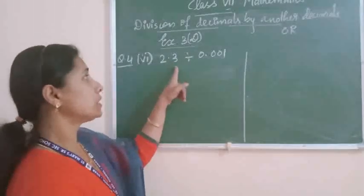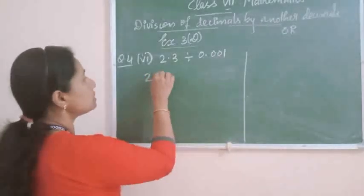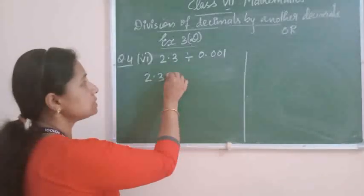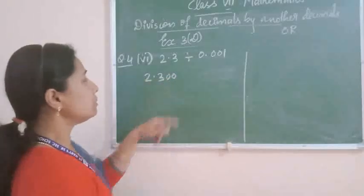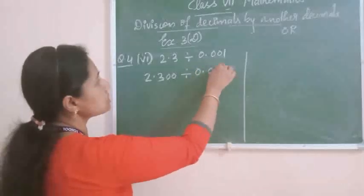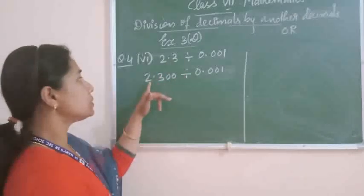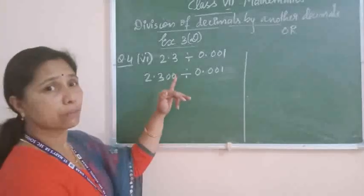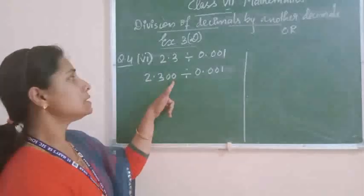Like decimals means the number of digits after the point will be the same. So you take 2.3 — here 3 digits are needed, but only 1 digit is given. So you can make it 3 digits by adding 2 more zeros. Now it is 2.300 divided by 0.001. You already know that 2.3 is equal to 2.300 — whenever we write zeros to the right side of a decimal number, the value does not change.